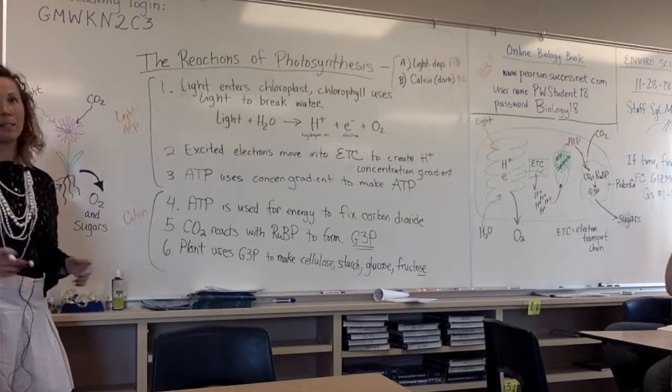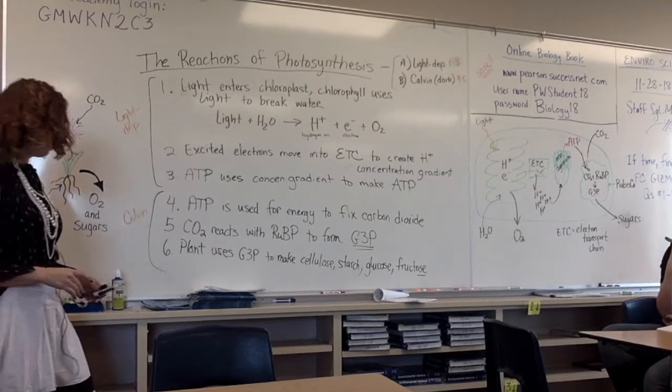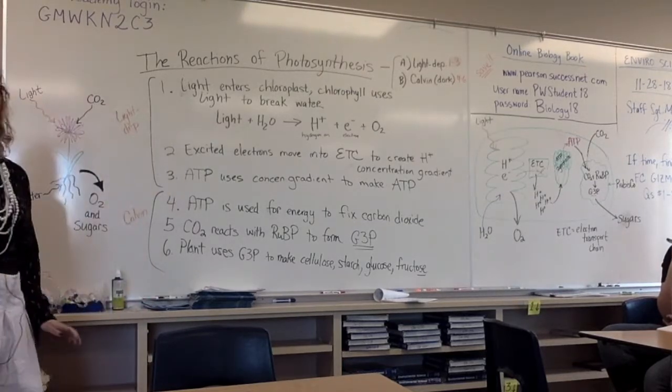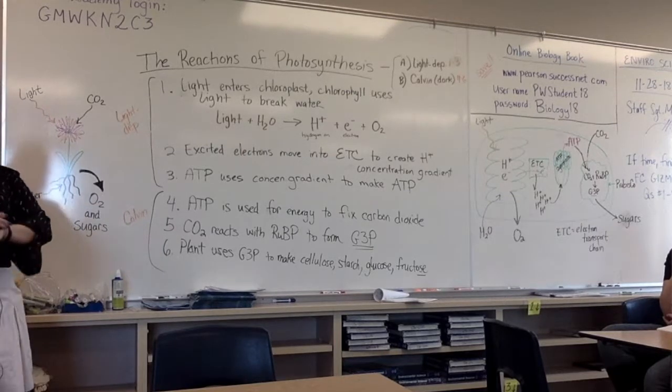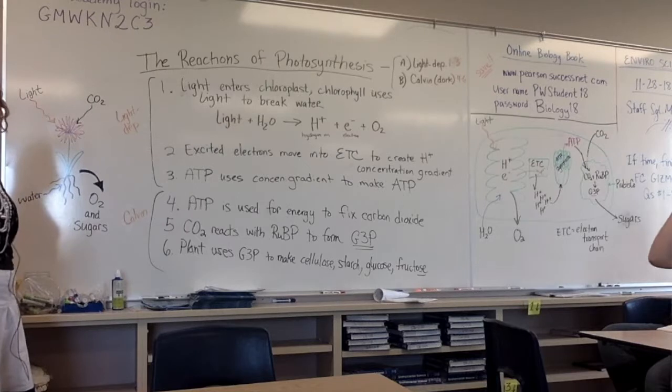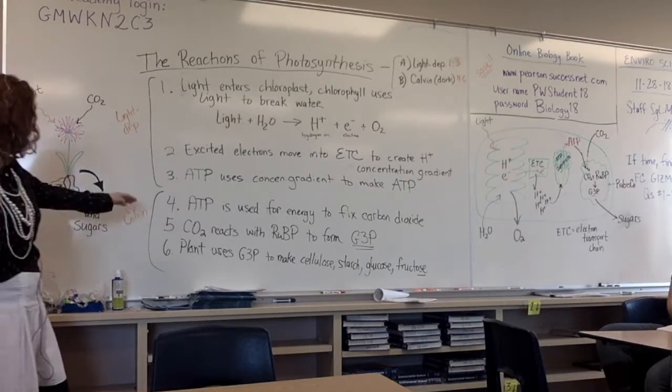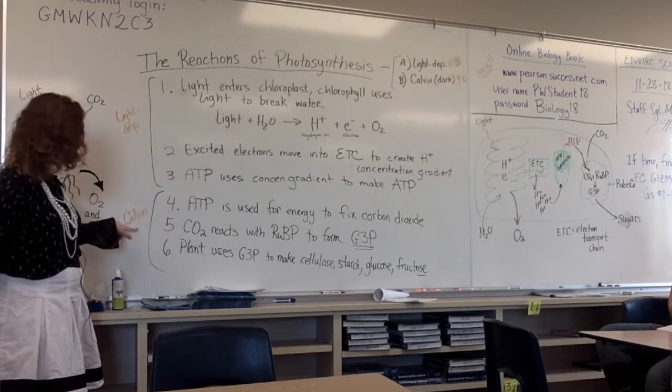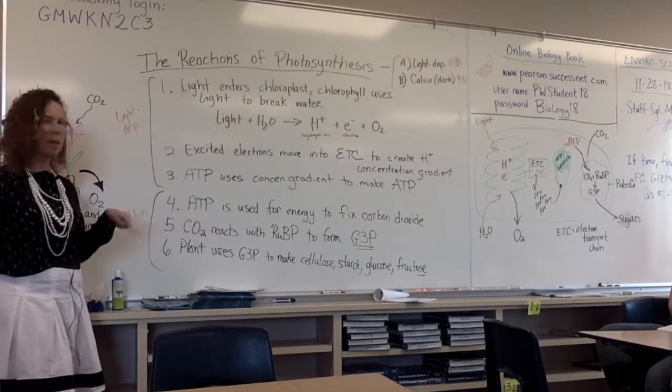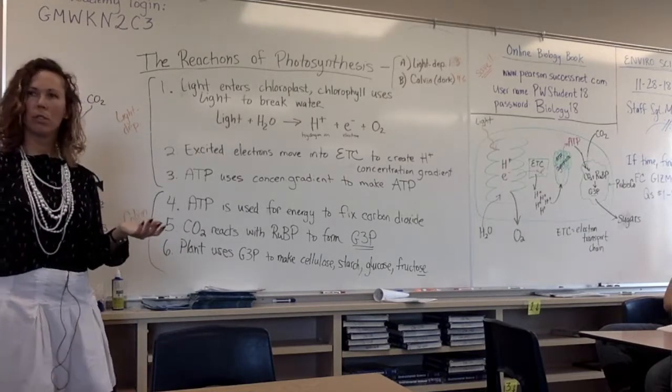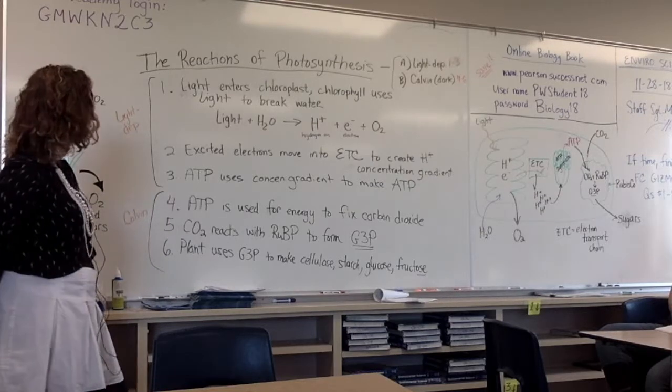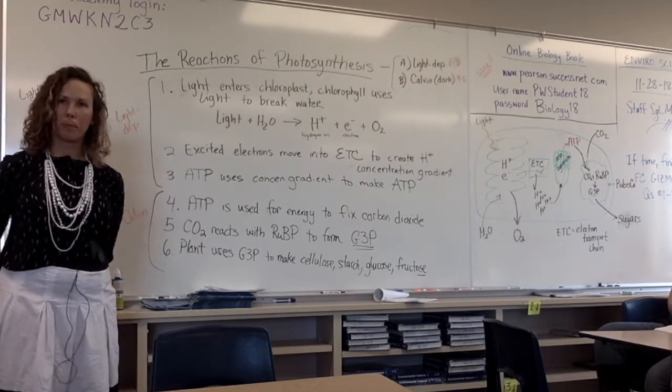And with that, that is as simple as I can make photosynthesis. So again, the second half, four through six, is the Calvin cycle. If you haven't labeled that in some way, you should. I'm guessing you probably used about a page, assuming you drew the picture and wrote all the directions, all the steps.